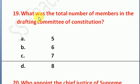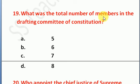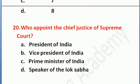Question number 19: what was the total number of members in the drafting committee of the Constitution? Option A: 5 members, Option B: 6 members, Option C: 7 members, Option D: 8 members. Seven members was the total number — Option C is the right answer.